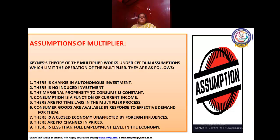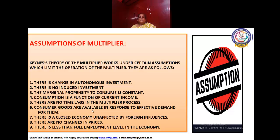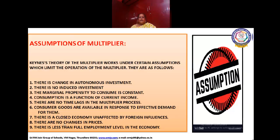Number 4 — consumption is a function of current income. Number 5 — there are no time lags in the Multiplier process. Number 6 — consumer goods are available in response to the effective demand for them. Number 7 — there is a closed economy unaffected by foreign influences. Number 8 — there are no changes in prices. Number 9 — there is less than full employment level in the economy.